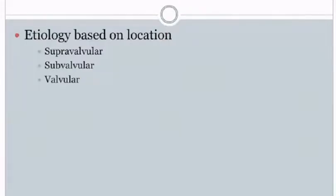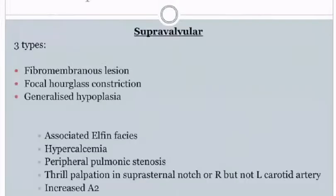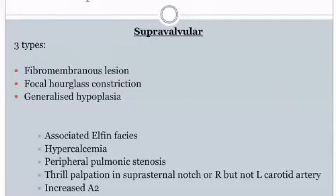The etiology of aortic stenosis is clustered based on location into supravalvular, subvalvular and valvular. Aortic stenosis is mainly of three types: fibromembranous lesion, focal hourglass constriction, and generalized aortic stenosis.